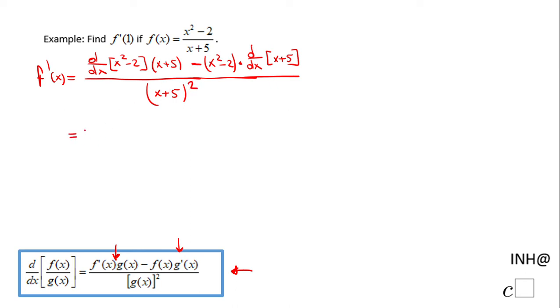Now we're going to do the derivatives. The derivative of x squared minus 2 is just 2x times x plus 5, minus x squared minus 2. Now we do the derivative of x plus 5, which is just 1, over x plus 5 squared.